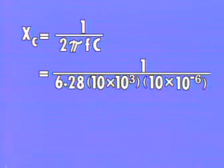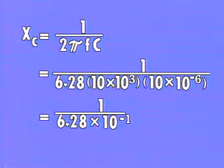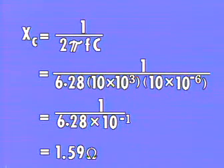1 divided by the quantity 6.28 times 10 kilohertz times 10 microfarads equals 1 divided by 6.28 times 10 to the minus 1, equals 1.59 ohms.